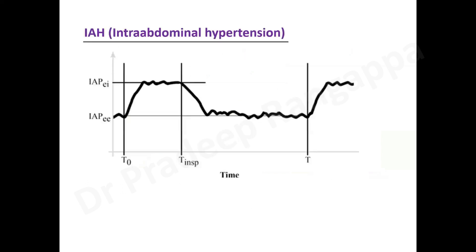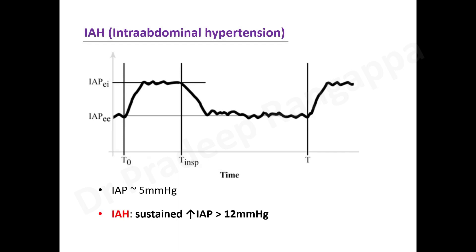When you look at intra-abdominal hypertension, this is the waveform when you transduce the intra-abdominal pressure. During end-inspiration the pressure tends to increase and during end-expiration the pressure tends to come down. Intra-abdominal hypertension is an important variable to monitor, especially in patients where there is suspicion of abdominal compartment syndrome.